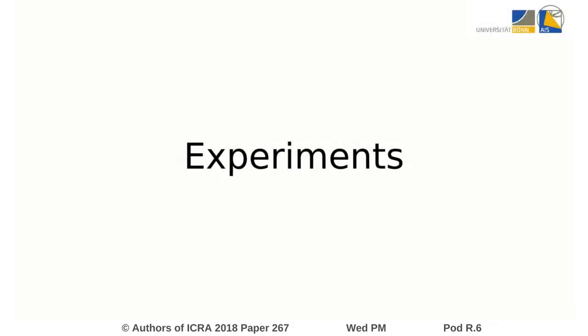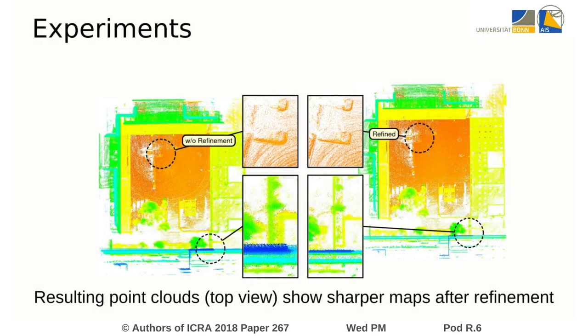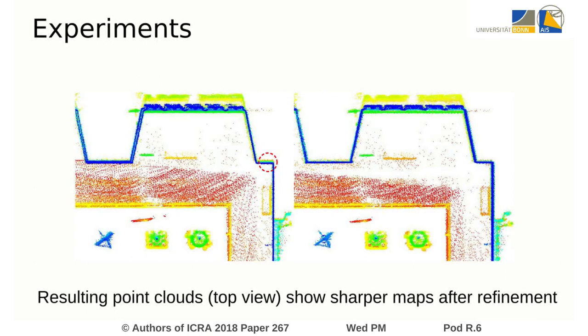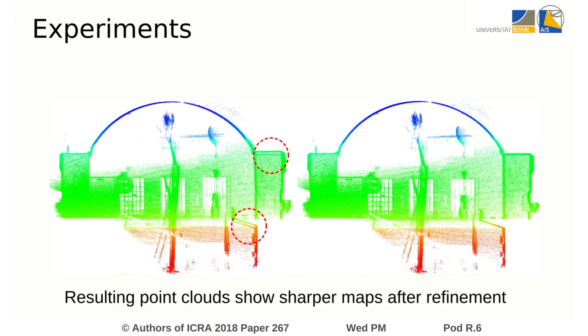We assess the accuracy of our refinement method on two different datasets with different sensor setups. Evaluation shows that our approach increases map quality and leads to sharper maps.